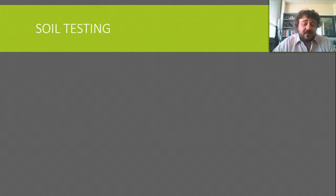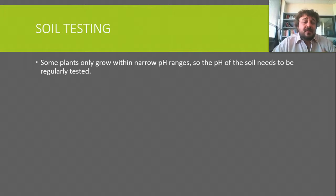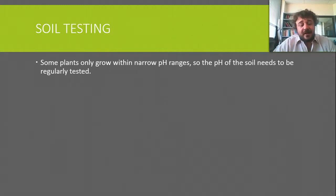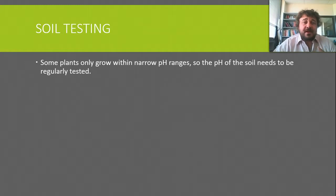Alright, so soil testing. We test pH because some plants only grow in fairly narrow ranges of pH, therefore we need the soil to be what it is. Another reason for testing soil — and you should write this down — is that it's a good way of knowing if the soil is being polluted. If there's a sharp pH change, you can tell that something is running off into the soil.